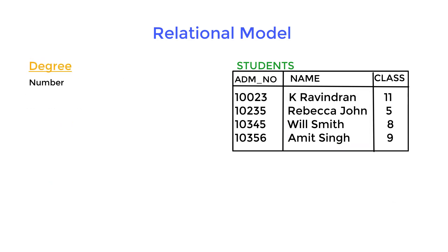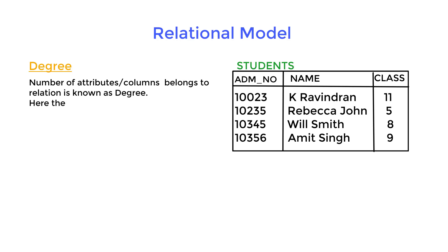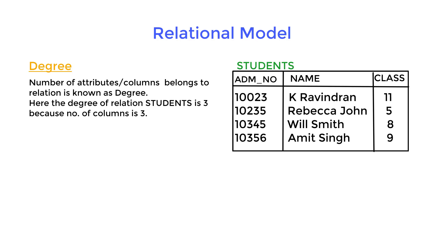Degree: the number of attributes or columns belonging to a relation is known as degree. Here the degree of the relation student is three, because the number of columns is three.